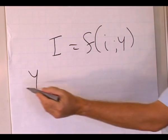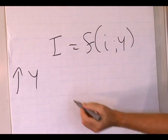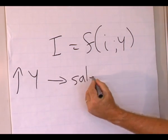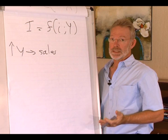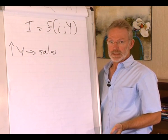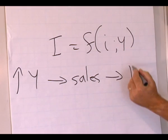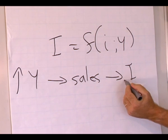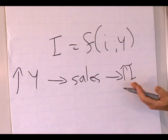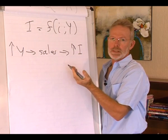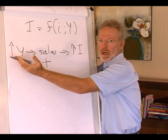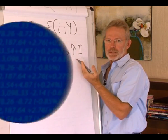Let's say there's an increase in output. Firms will experience an increase in sales. In other words, to increase investment. An increase in output leads to an increase in investment — in other words, there's a positive relationship between output and investment.